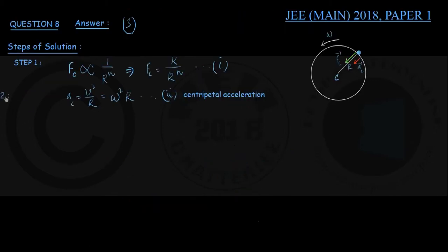In my next step, that is step number 2, I can simply apply Newton's second law of motion. This central force must be mass into this acceleration. So Fc is equal to mass of the particle into this acceleration, that is Ac.